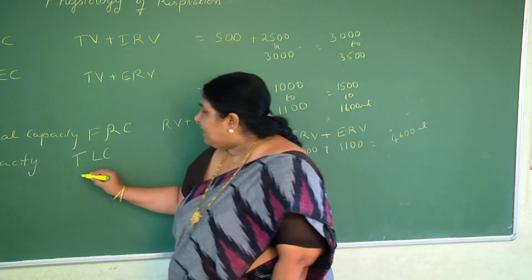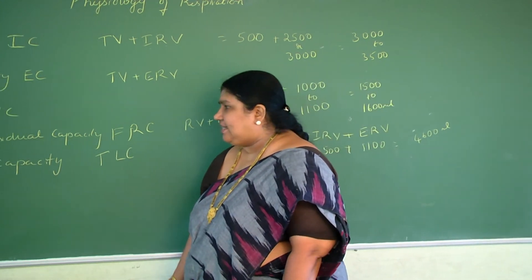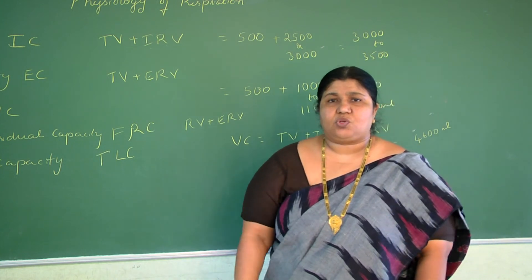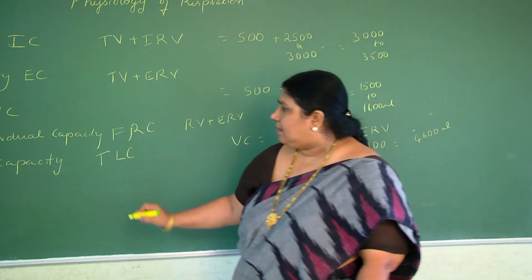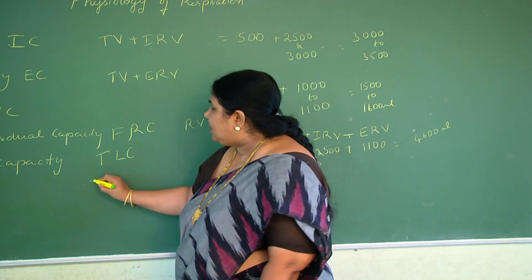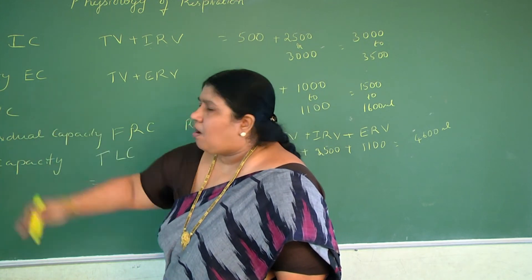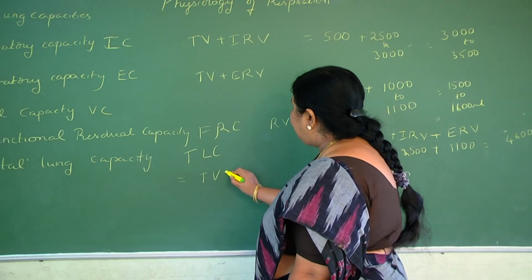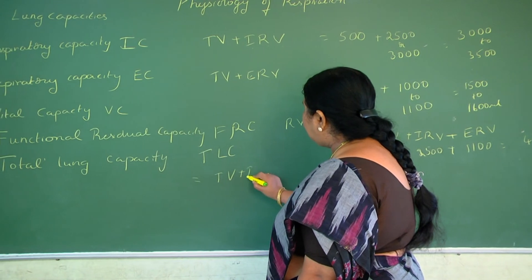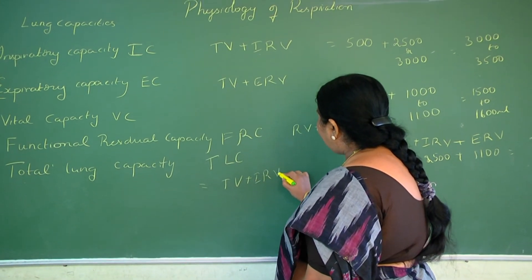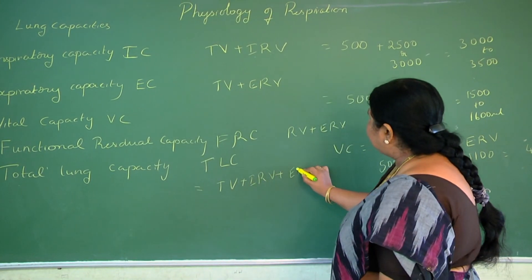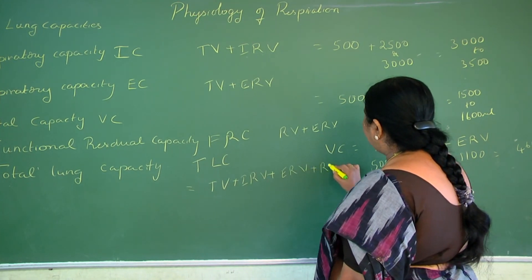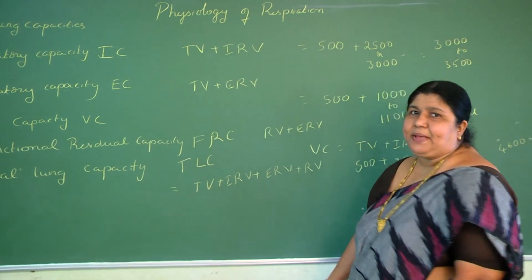What is total lung capacity — TLC? The total amount of air taken into the lungs is called total lung capacity. We get TLC by summing all four lung volumes: TV plus IRV plus ERV plus RV. That gives us the total lung capacity.